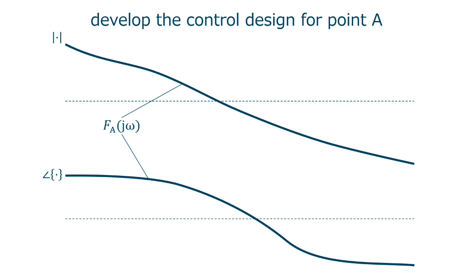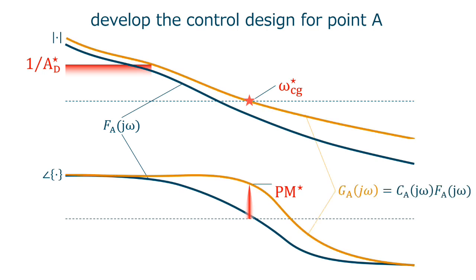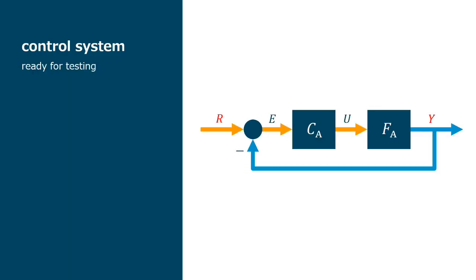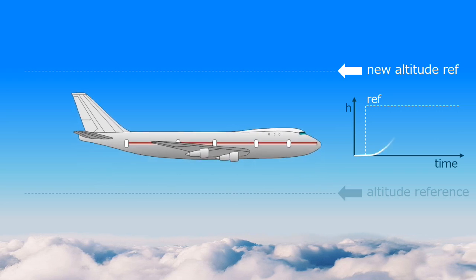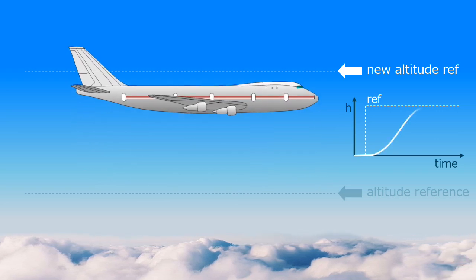We take the plant's description at point A to develop the control design. We have the specifications for disturbance rejection, bandwidth and phase margin, and we develop controller CA fulfilling all specifications. We close the loop controller CA with the model FA and we get the control system ready for testing. We test the controller at point A and we have a response as specified. Just perfect.